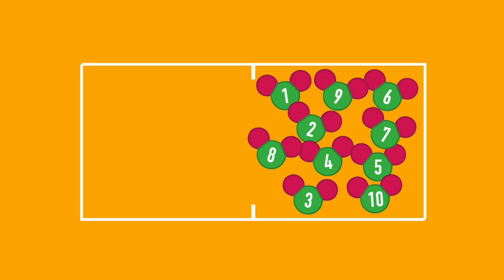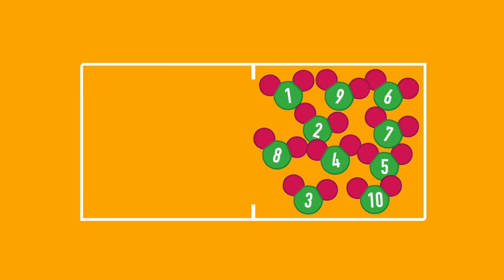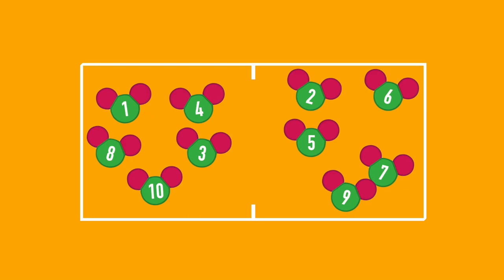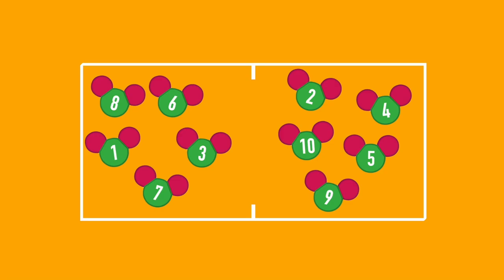Let's say we have ten molecules and two rooms. We can put all molecules in one room and none in the other, and there is only one way to do that. On the other hand, if we distribute five molecules per room, there are many ways to do so. Every permutation is a different state from a molecular perspective, but nothing really changes at the macroscopic level. This means that the level of disorder, or entropy, in this case is much higher than in the first case.